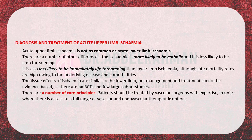There are important differences between upper and lower limb acute ischemia. Upper limb ischemia is more likely to be embolic and less likely to be limb-threatening. It is also less likely to be immediately life-threatening because ischemia-reperfusion injury is milder than in the lower limb, although late mortality rates are high due to underlying disease and comorbidities. The tissue effects of ischemia are similar to the lower limb, but management cannot be fully evidence-based as there are no randomized controlled trials and very few large cohort studies.